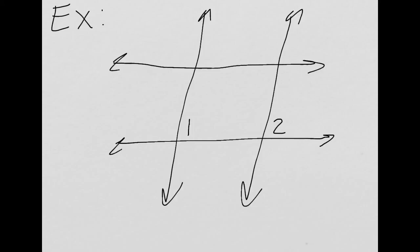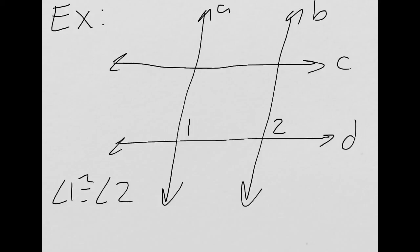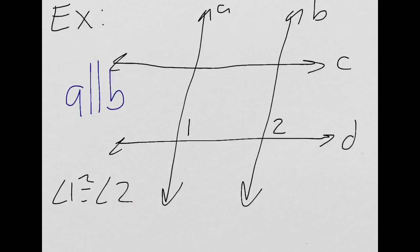Let's look at an example using theorem 3-4. If I tell you that angle 1 is congruent to angle 2, you need to tell me which pair of lines — A, B, C, or D — is parallel. These angles are corresponding angles; they are in the same location on the same side of the transversal. The transversal is line D. So if angle 1 is congruent to angle 2, then A is parallel to B, and I can mark them as parallel using arrows.